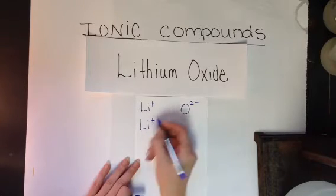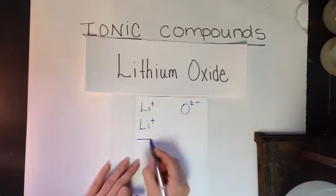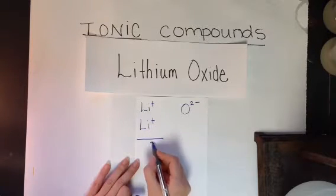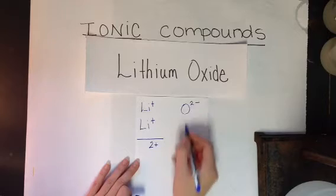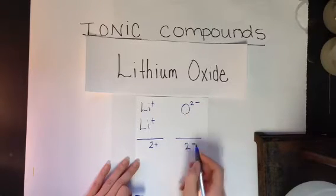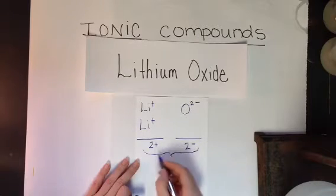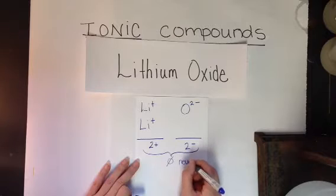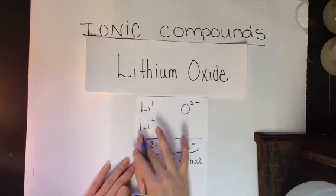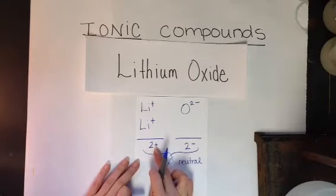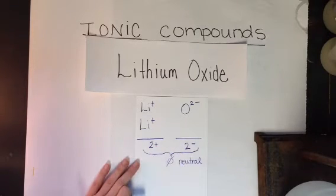So, if I add another lithium now, let's add that up. A plus and a plus make two plus. And if I take just my one oxygen, I get the two minus. Two plus and two minus, that yields a zero neutral charge. That's what we want to do. We want to make them equal to each other so that they cancel out. So, two positive and two negative cancel out to zero.